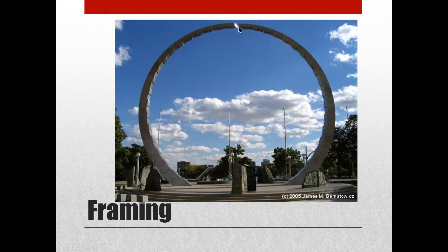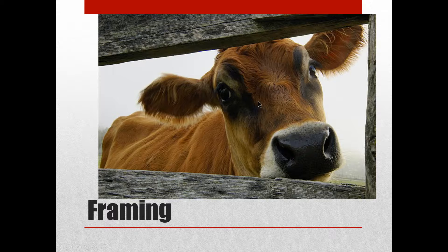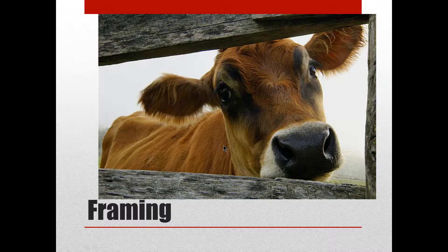Here's another object-framing example — this monument isn't the most exciting photo, but it frames the clouds in the background. Just because you follow these rules doesn't guarantee the best photo ever, but knowing them can help you make better photos. For example, a photo of a cow probably wouldn't be as great as this one with all the texture from the fence — object framing an object making a really cool photo.